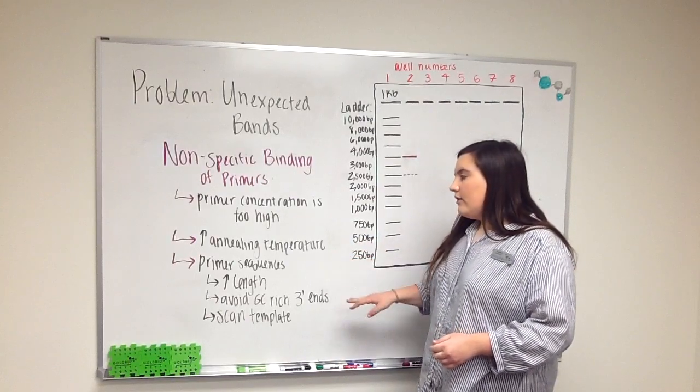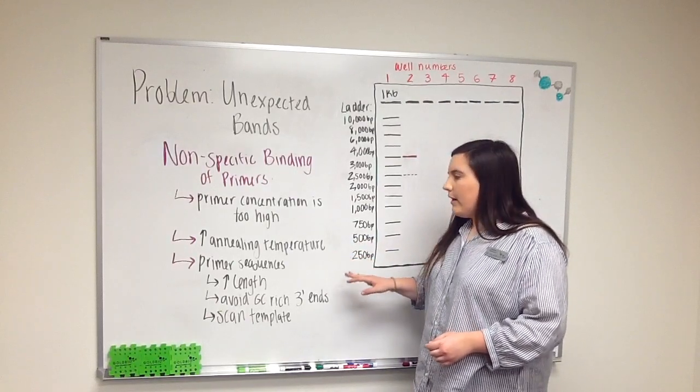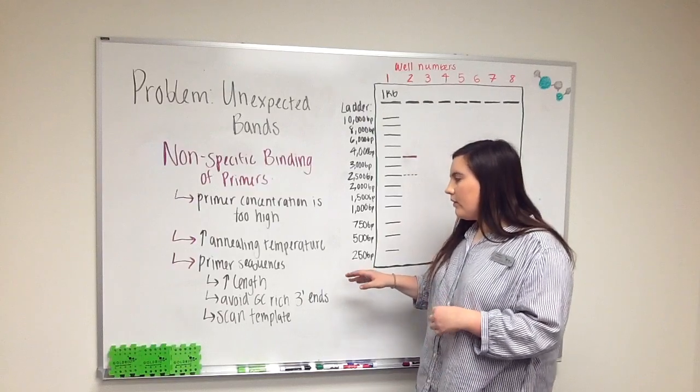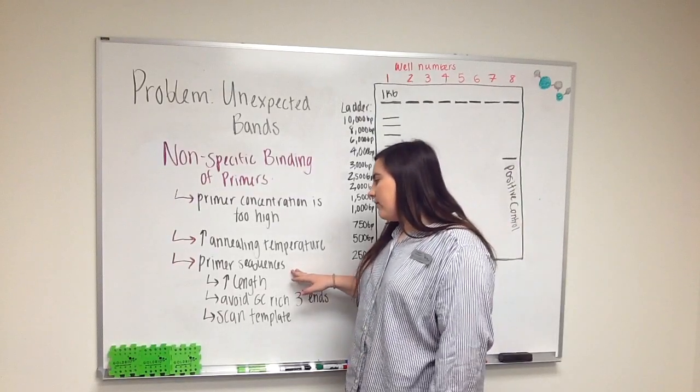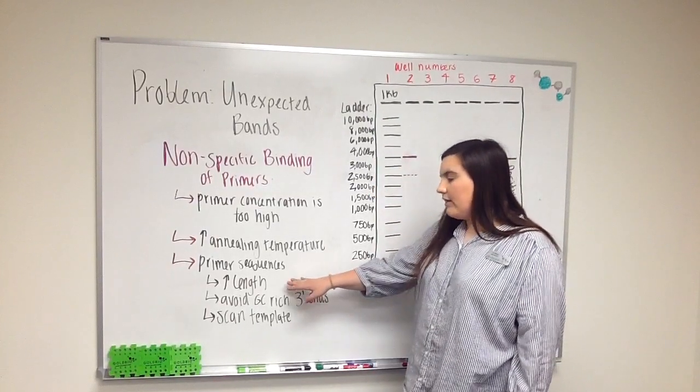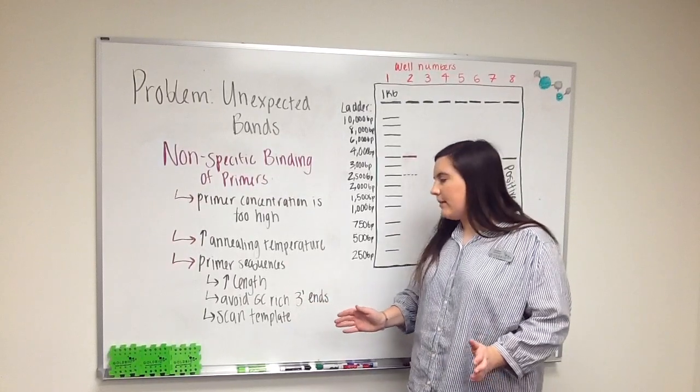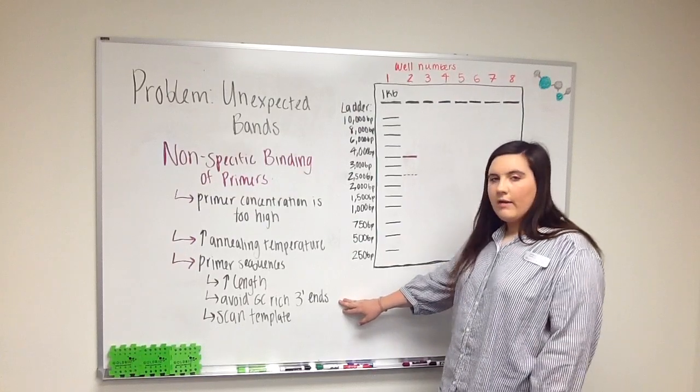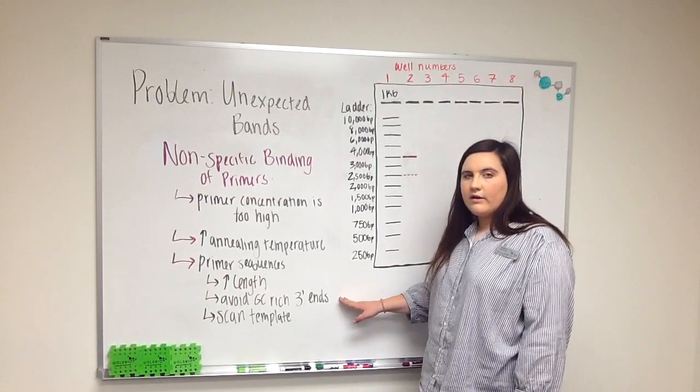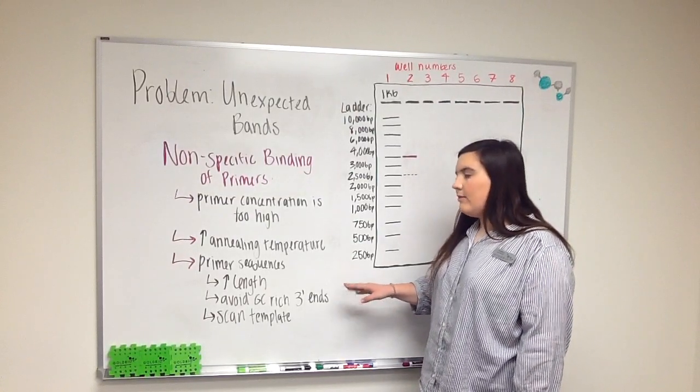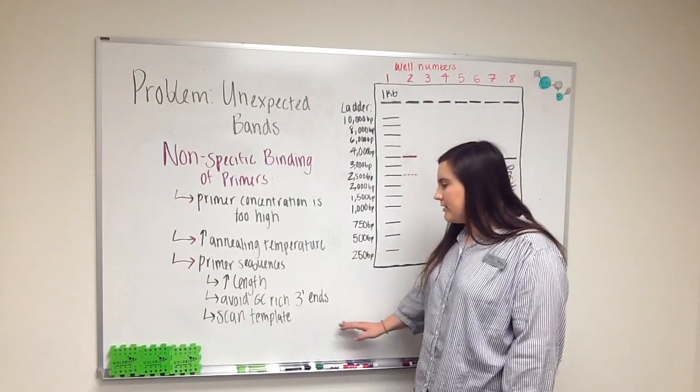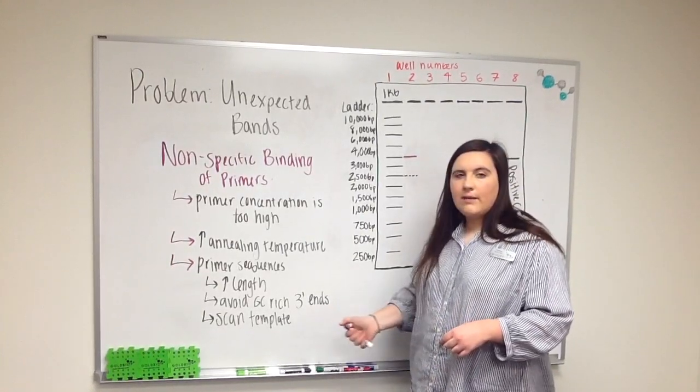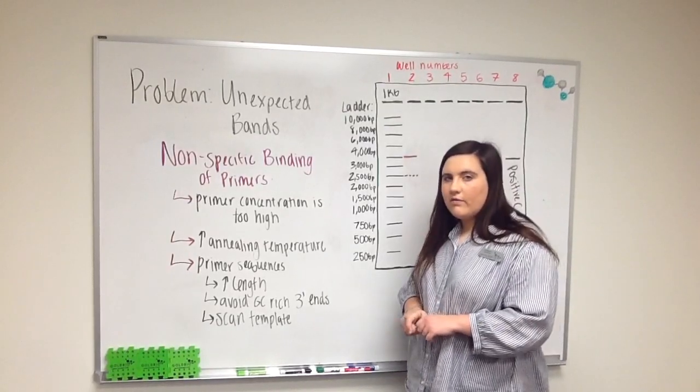You can also try increasing your annealing temperature to make sure your primers are specific. You can also alter the primer sequences and increase the length of the primers to make sure they're binding to the right place on the template. Also, try avoiding GC-rich 3' ends because these could result in secondary structures of the primers, inhibiting them from binding to your template strand. Also try scanning your template to make sure there are no alternate binding sites for your primers.